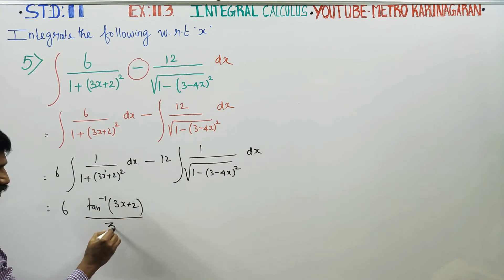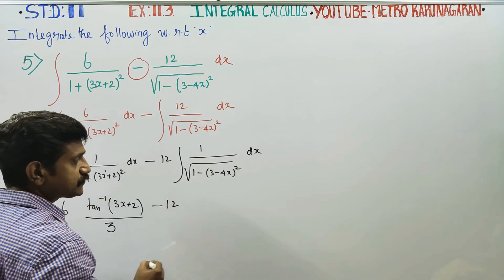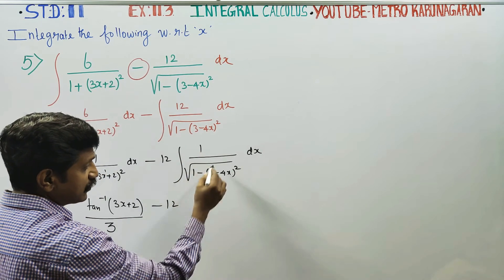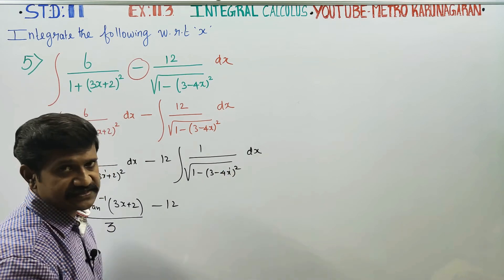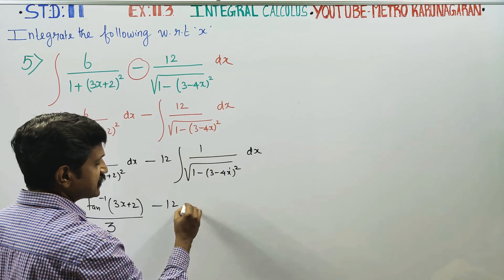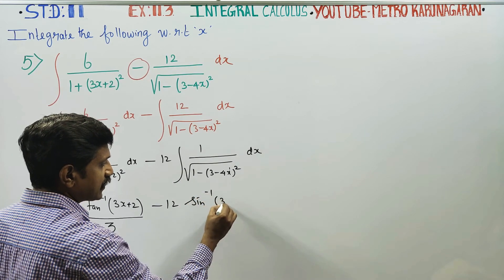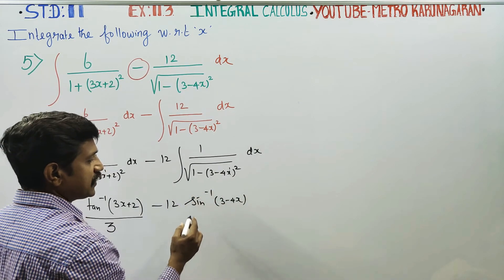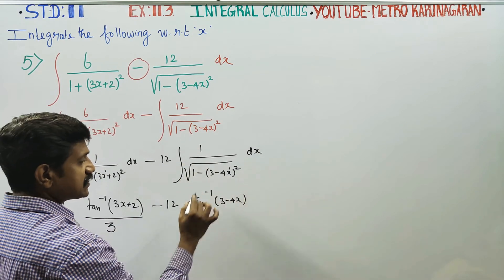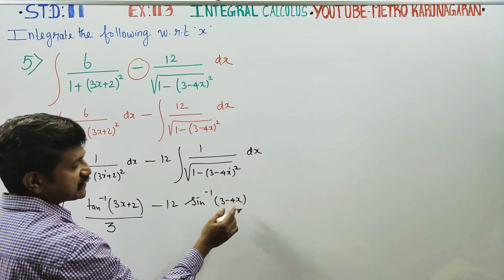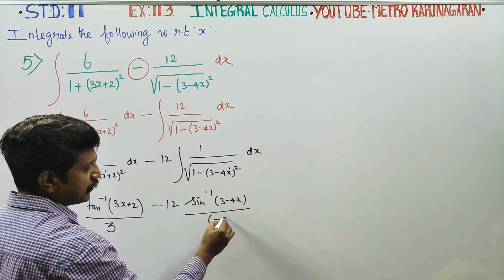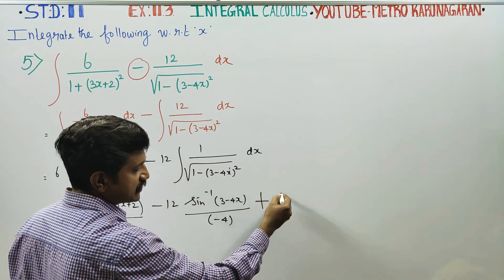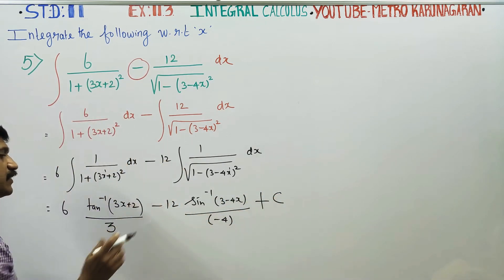For the second integral, the formula for 1 by square root of (1 minus x squared) gives sin inverse of x. Since 3 minus 4x is a linear function of x, you can apply the sin inverse formula. So the integral becomes sin inverse of (3 minus 4x).